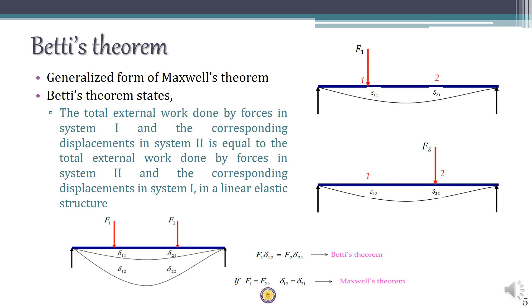Let's take a beam and apply force F1 at point 1, which causes displacements delta_11 at point 1 and delta_21 at point 2. Applying another force F2 at point 2 causes displacements delta_12 at point 1 and delta_22 at point 2. Together, the total deflection under F1 is delta_11 plus delta_12, and the total deflection under F2 is delta_21 plus delta_22.